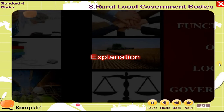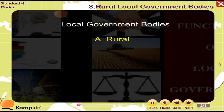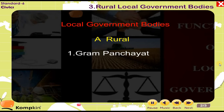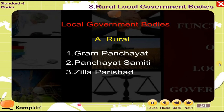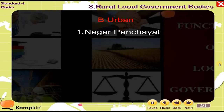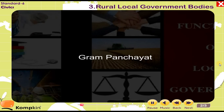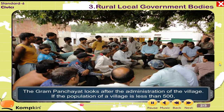Local Government Bodies are divided into Rural and Urban categories. Rural bodies include: 1. Gram Panchayat, 2. Panchayat Samiti, and 3. Zilla Parishad. Urban bodies include: 1. Nagar Panchayat, 2. Municipal Council, and 3. Municipal Corporation.